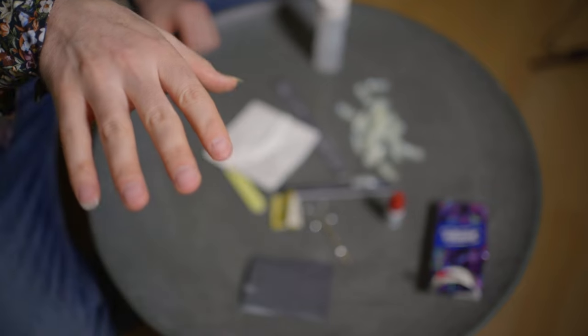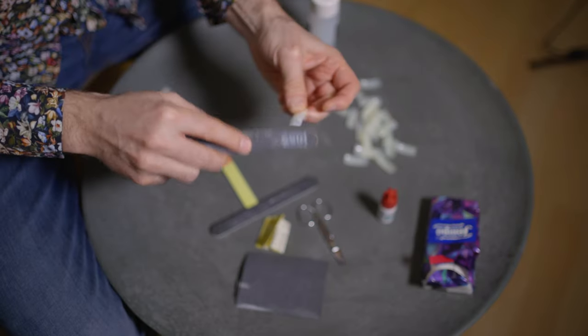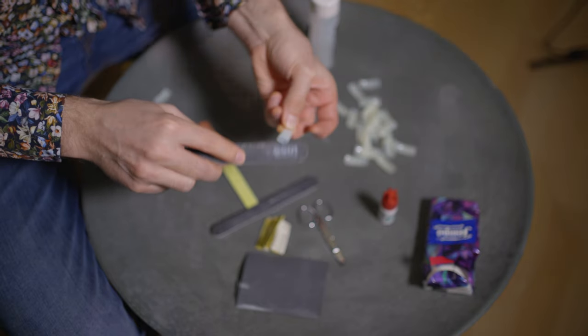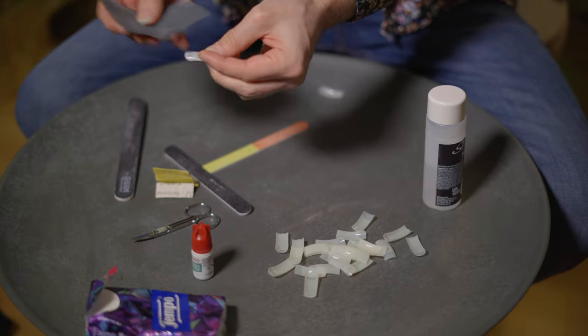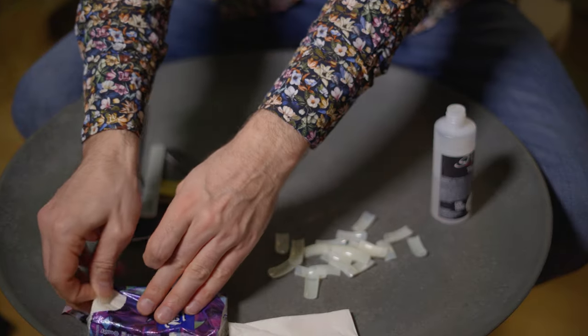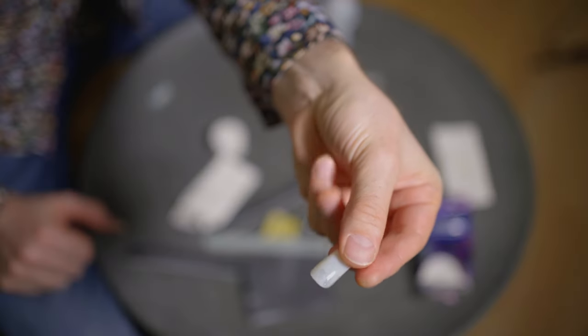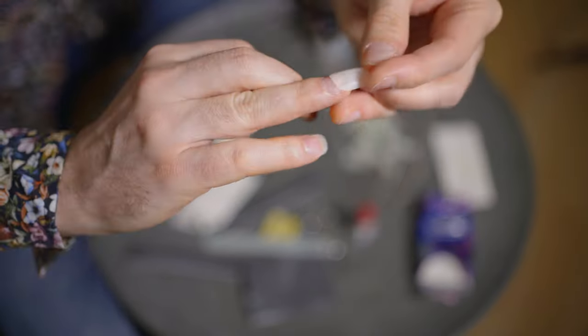The artificial nail is given a rounded shape and then I clean it very well. I degrease also and dry it. For me it's also important that the edge of the nail is filed so that the glue on the artificial nail meets the natural nail without any visible break.